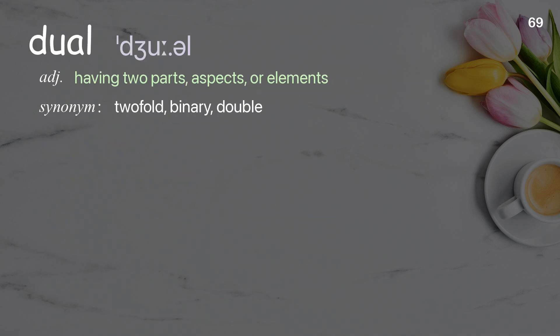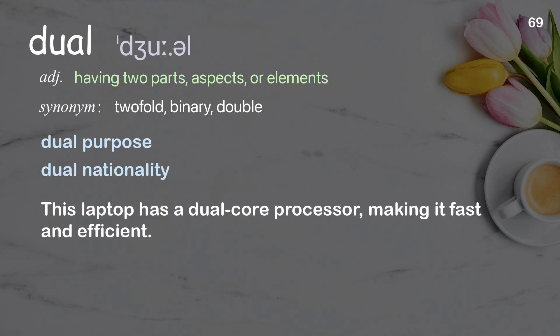Dual: having two parts, aspects, or elements. Examples: dual purpose, dual nationality. This laptop has a dual core processor, making it fast and efficient.